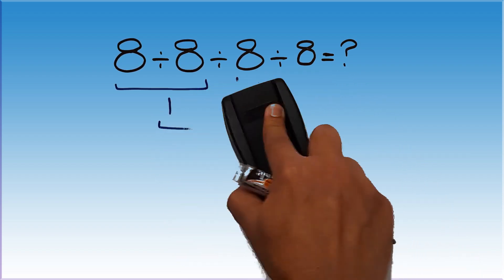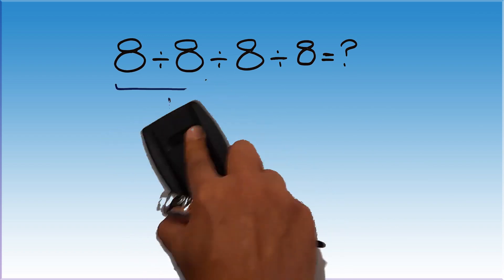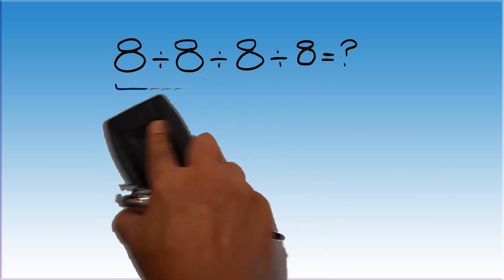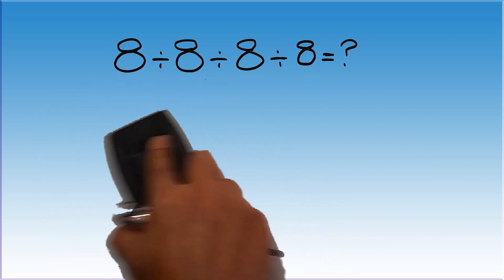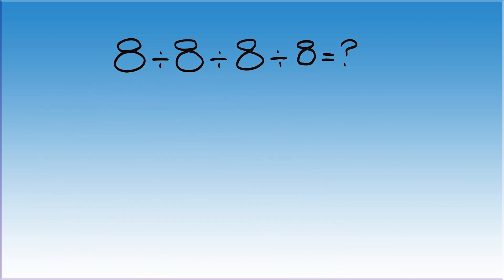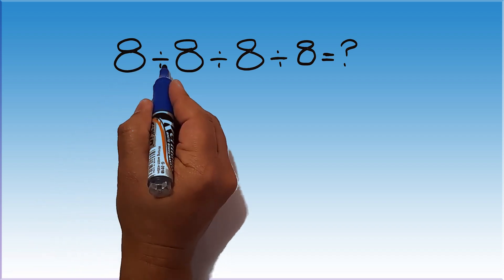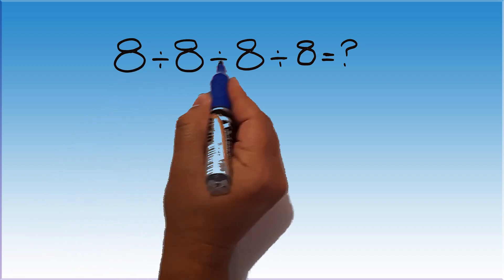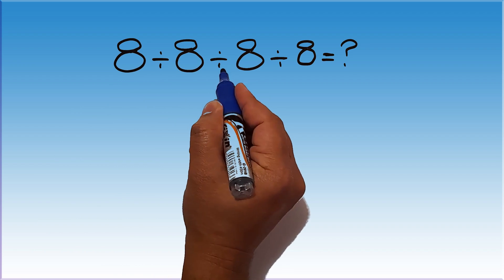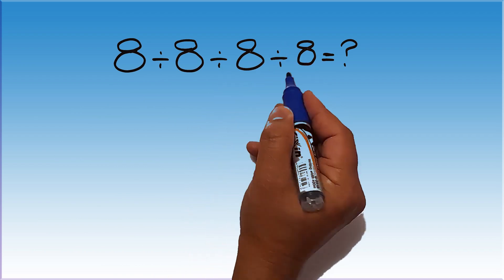Because we have to move from left to right according to the order of operations. So here, first this division, then this division, and finally this division.